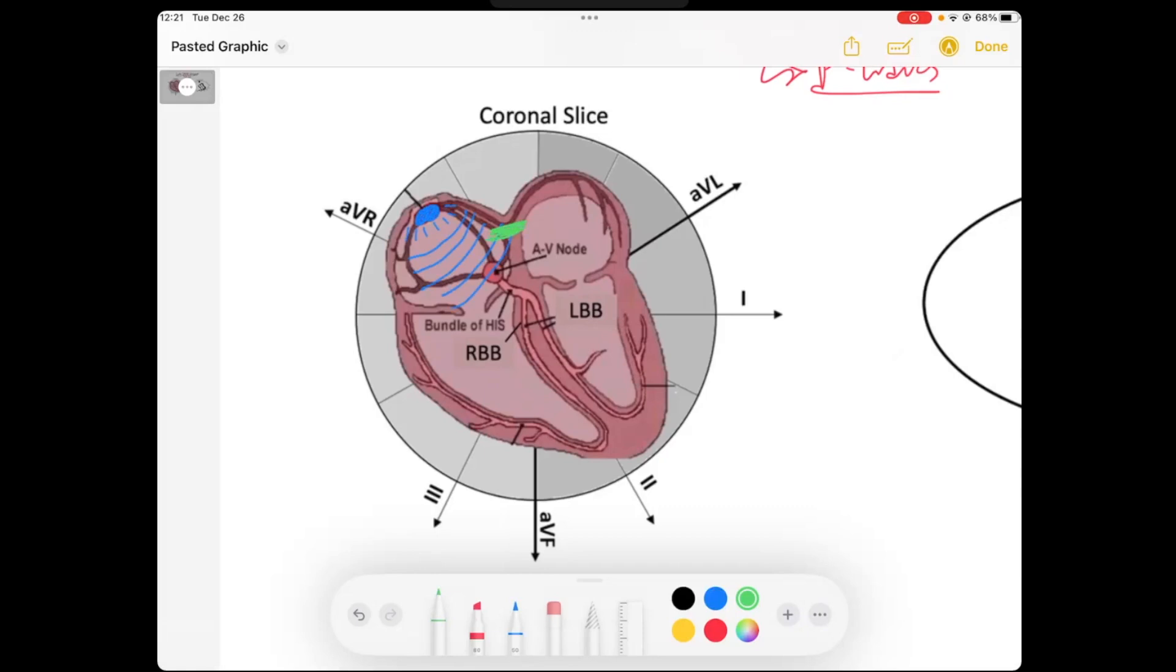And then, via Bachman's bundle, which is this channel, this bundle, Bachman's bundle, that is how we conduct that signal from the right atria to the left atria, which then causes the left atria to depolarize.